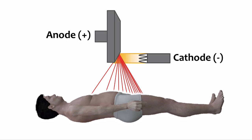Fortunately, the anode heel effect isn't all bad. In fact, if you understand the heel effect, you can actually use it to your advantage. For example, when performing an abdominal x-ray, the upper abdomen is less dense than the lower abdomen because the lower abdomen includes the very dense pelvic bone. If we purposefully place the anode side of the beam over the upper abdomen and the cathode side over the lower abdomen, this allows for a more even exposure to the receptor. The high intensity cathode portion of the beam is placed over the densest portion of the patient, and the low intensity anode side is placed over the least dense portion.